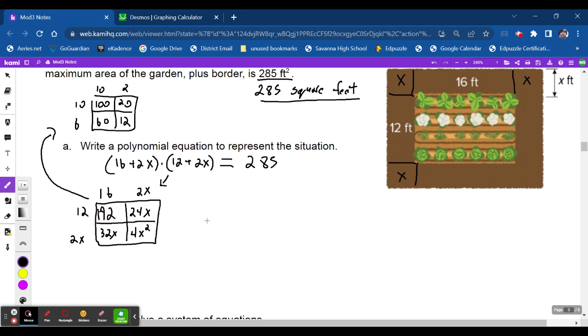192. So if I rewrite this, I would get 4x squared plus 24 plus 32 right here, which would be because they both have x, that would be 56x. And then plus 192 is equal to 285. All right, there we go. Well, here's my equation.